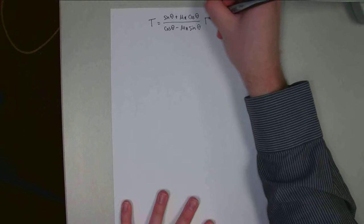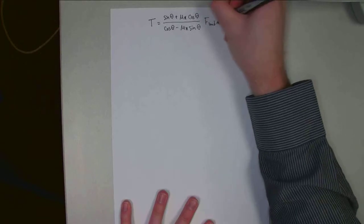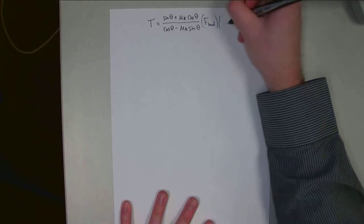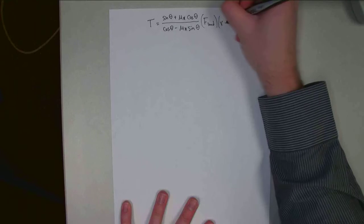That gets multiplied by F load times the radius of the shaft.